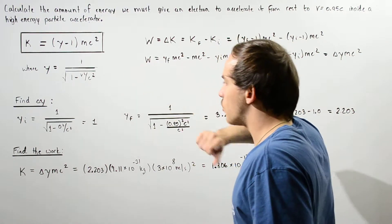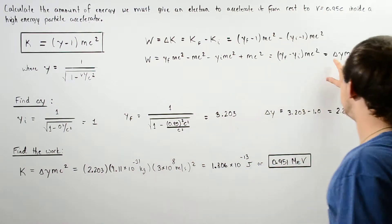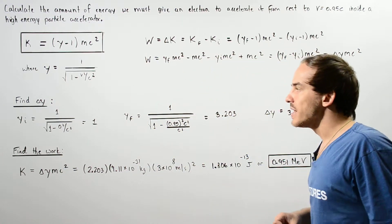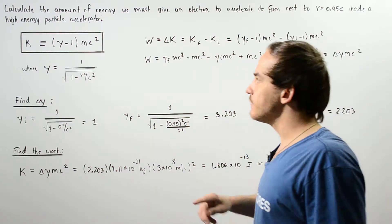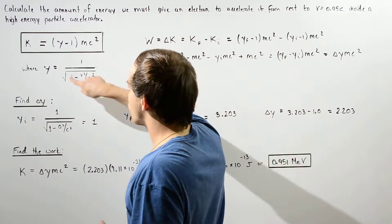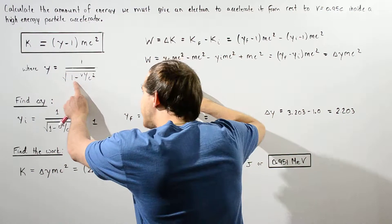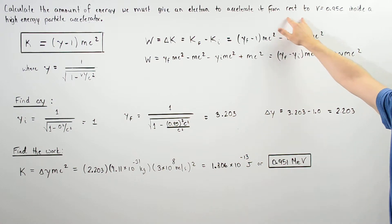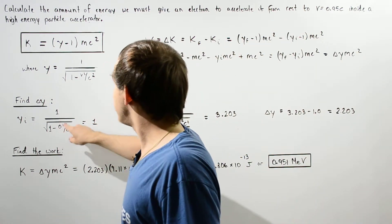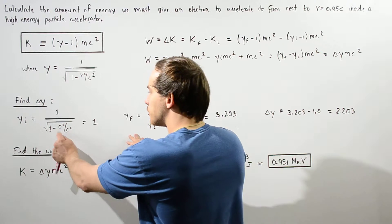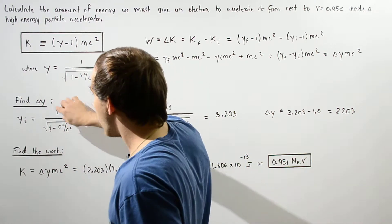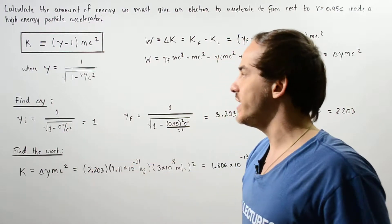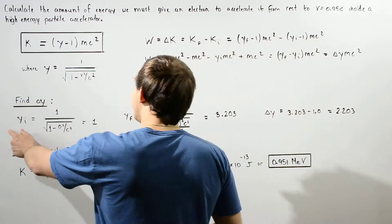To calculate the work, we need to calculate delta gamma. Let's begin by calculating gamma initial. Gamma initial is 1 divided by the square root of 1 minus v squared over c squared, and since the velocity is 0 — because we begin from rest — that term goes to 0. We have 1 divided by the square root of 1, which gives us 1. So gamma initial equals 1.